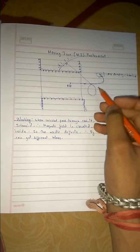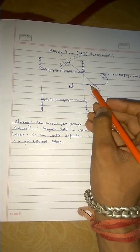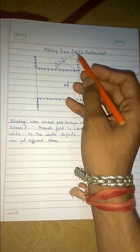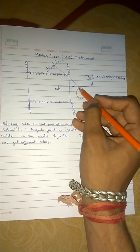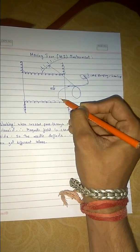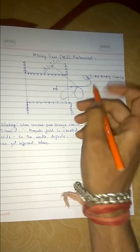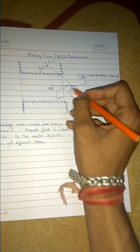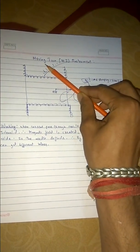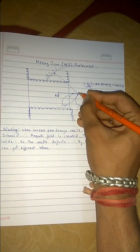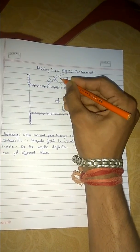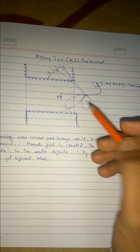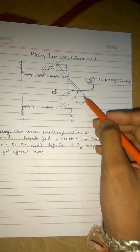The iron rod, which is placed in the magnetic field, feels some force. This iron rod is connected to our pointer, and these are the scales through which we get the reading. Initially it is in the rest position, and when the magnetic field is created - this is the attractive type - the rod is attracted inside. This movement causes deflection, which we read from the scale.